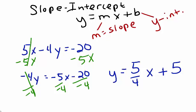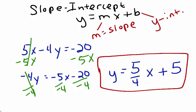So, the equation 5x minus 4y equals negative 20 can be rewritten in slope-intercept form as y equals 5 fourths x plus 5, where the slope is 5 fourths and the y-intercept is positive 5.